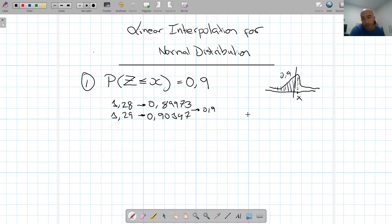There's not the same difference between one point and the other. So what are we going to do? We're going to suppose that we can approximate those values to a straight line.